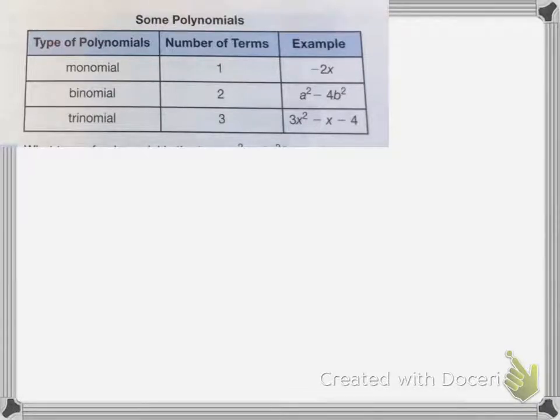A monomial will only have one term, so that's negative 2x. A binomial will have two terms, so I have one, two sections: a squared minus 4b squared. And then a trinomial has 3, the 3x squared is 1, the minus x is 1, and the minus 4 is 1.